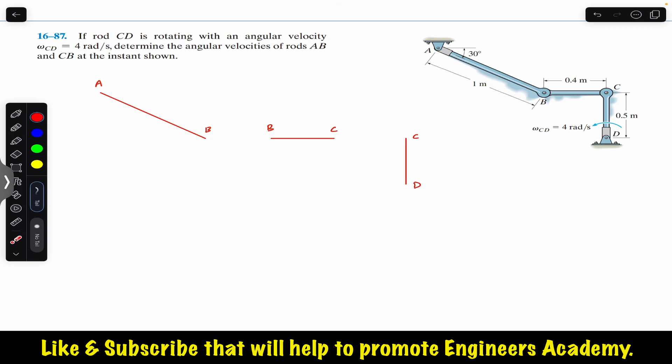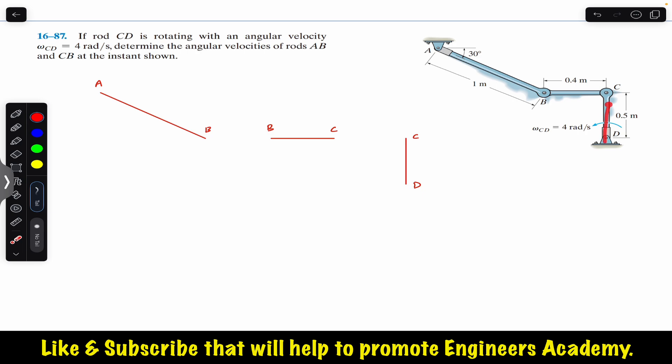Hello students, welcome to Engineers Academy. Do hit the subscribe button if you are here for the first time. We are going to solve this problem from chapter 16. This problem is related to the instantaneous center of zero velocity. The problem says that if rod CD is rotating with an angular velocity of 4 radians per second, determine the angular velocity of rods AB and CB at the instant shown.